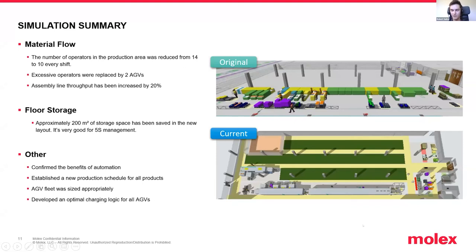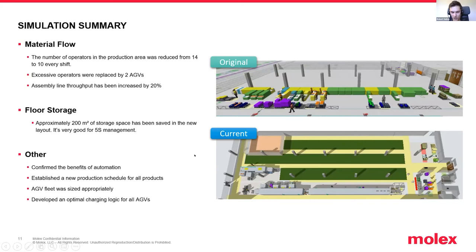Besides material flow improvement, we were able to confirm the benefits of automation, established a new production schedule for all products, appropriately sized the AGV fleet, and updated lots of other low-level processes such as charging logic. A small comment about this model overall: we try to focus on keeping the model modular so that if we want to improve this project in the future - for example, adding more products to the assembly line - we can add extra parameters and they won't break any existing logic. This makes it pretty efficient, especially when we use it with experimenter or optimizer.